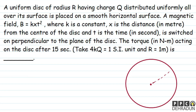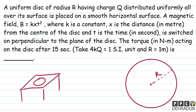So on the disc of radius R, the overall charge Q is distributed uniformly all over its surface. This disc is placed on a smooth horizontal surface — imagine a table with the disc placed on top of it. The magnetic field given is B = KXT², where K is constant, X is the distance from the center, and T is time. This magnetic field is switched on perpendicular to the plane of the disc — so we can say the magnetic field direction is vertically downward. We need to find the torque acting on the disc after 15 seconds.